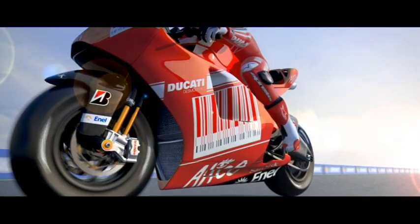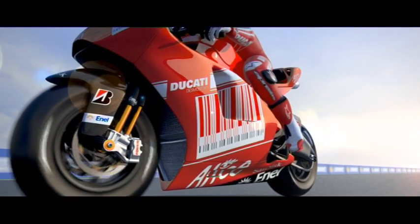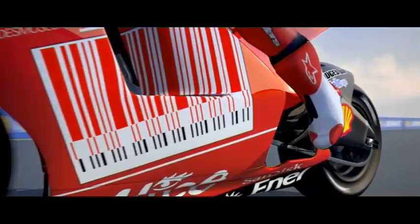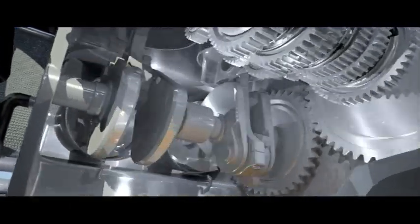It plays a key role for Ducati in lubricating the engine's rotating and oscillating parts and the constantly moving components of the gearbox. Take a look inside the bike at how the Shell Advance oil is used.